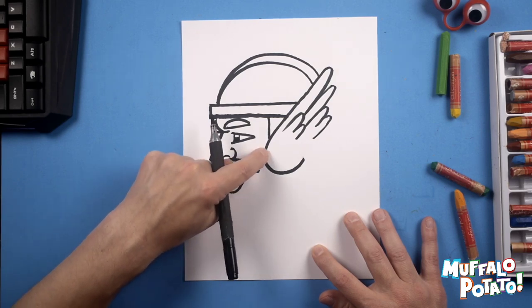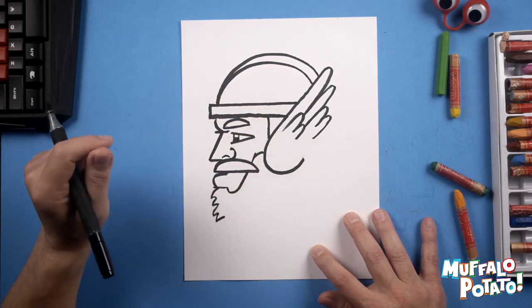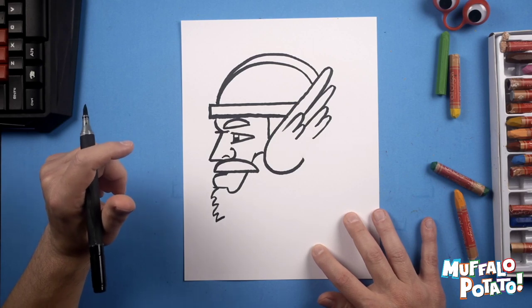We're going to do an R, lowercase r coming up here at an angle too. Not a very big R too. Just up and then bring it over. Just like that.